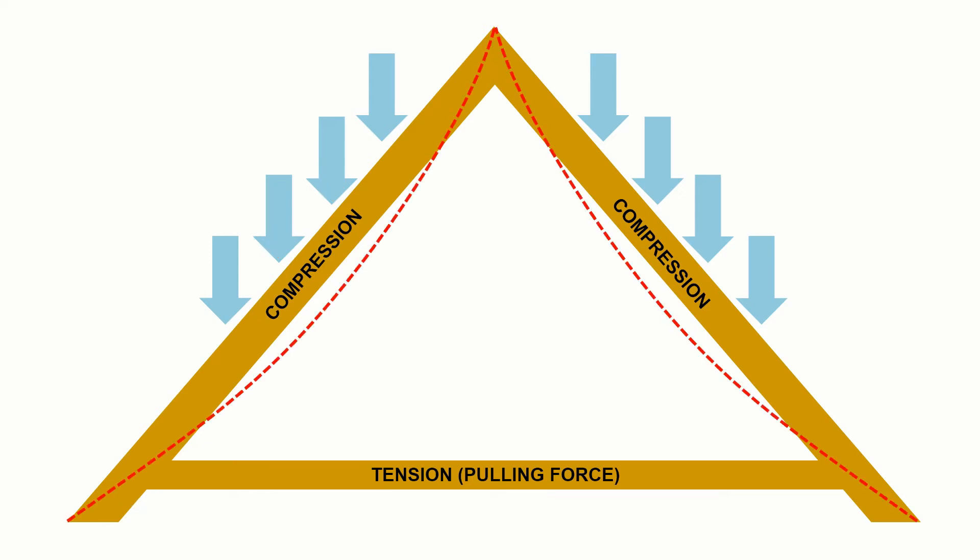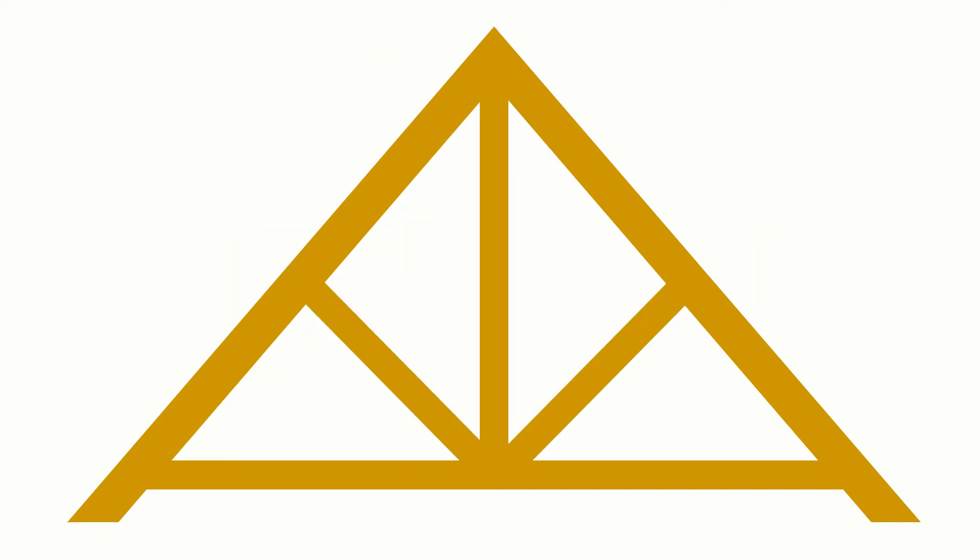But as soon as we start to get larger, we either have to make these elements much thicker to be able to deal with the span from the top to the bottom, or the roof would start to deform. So it would start to bend inwards if it was relatively small elements. So we tend to make roofs a little bit more complex, and a very simple version would be to install various posts and struts within that to increase the efficiency of the truss as a system.